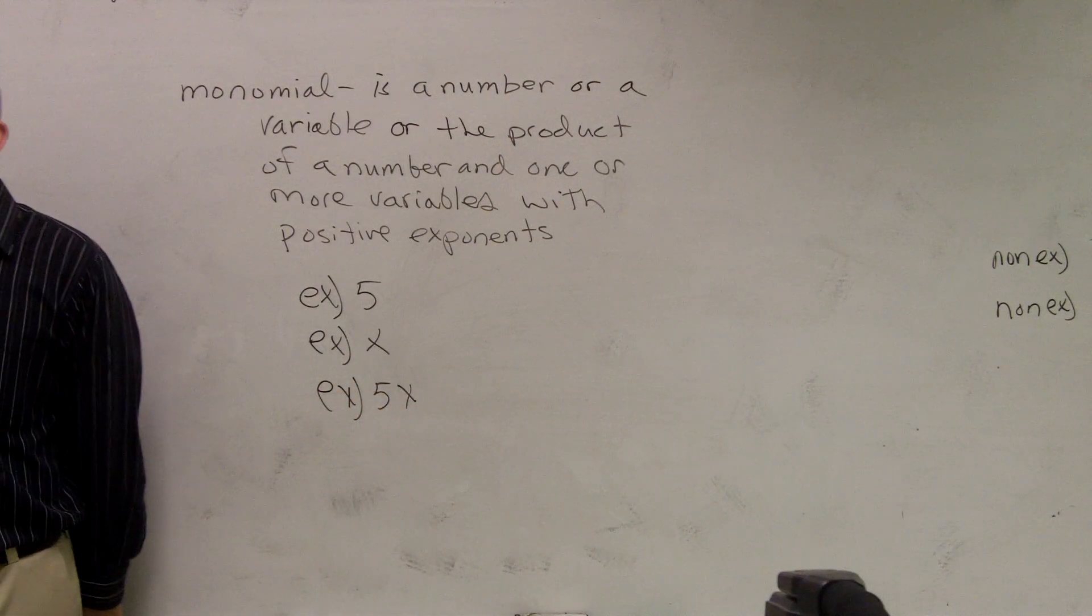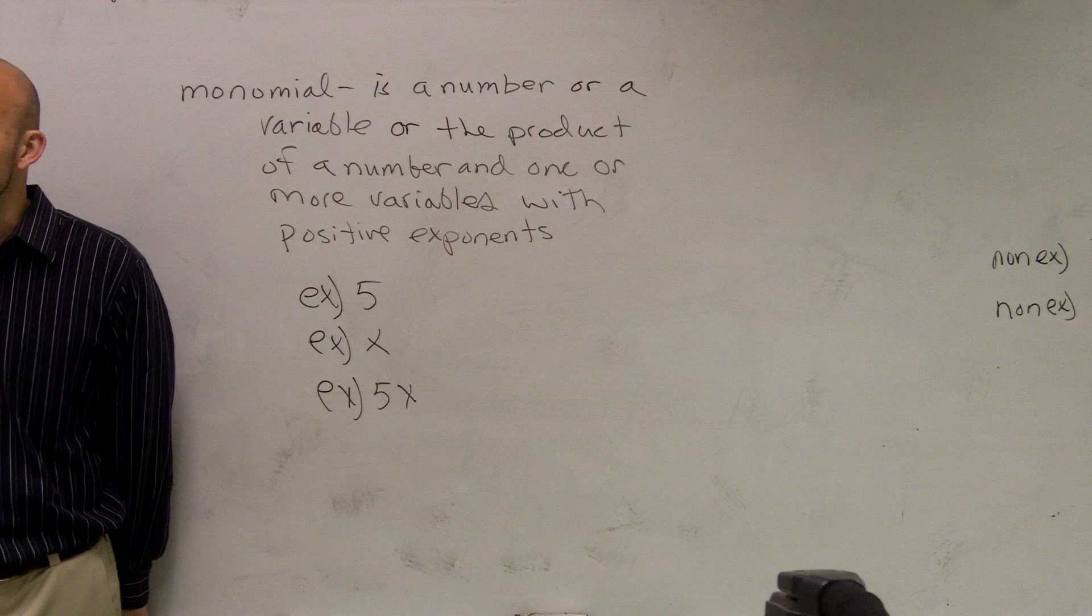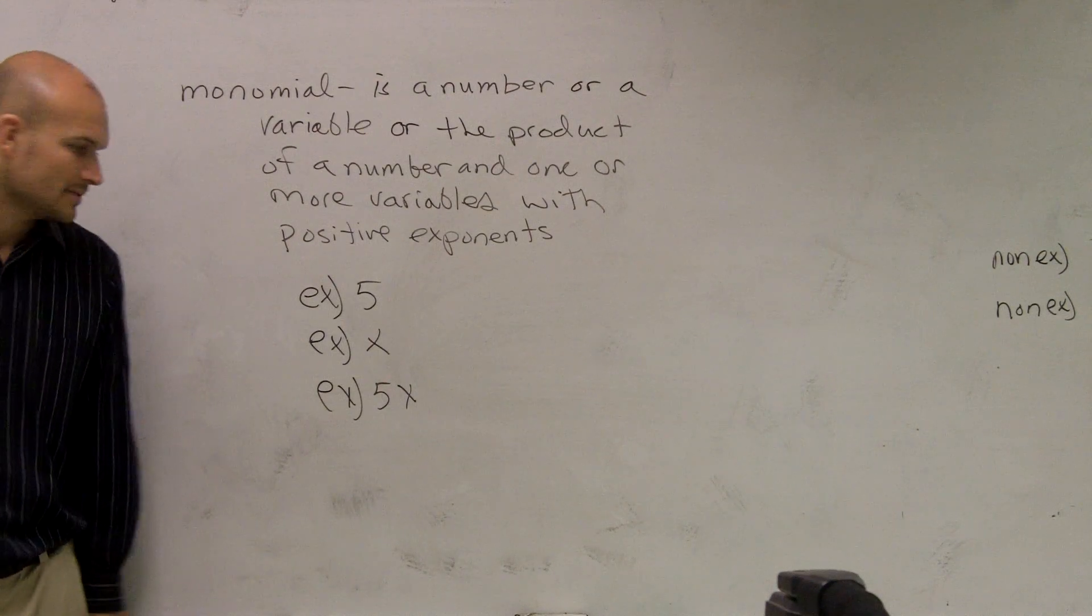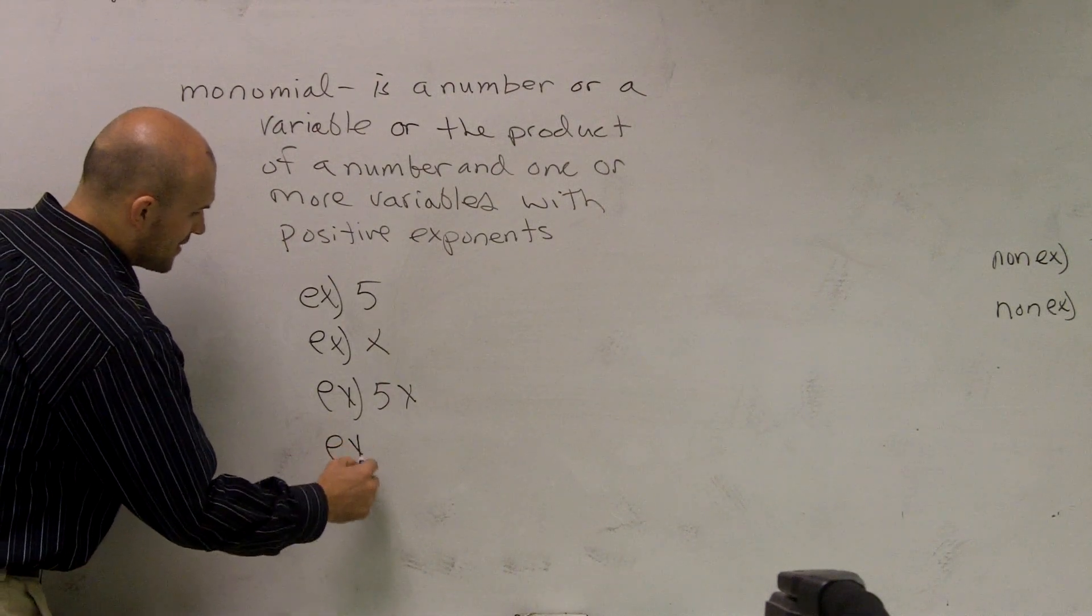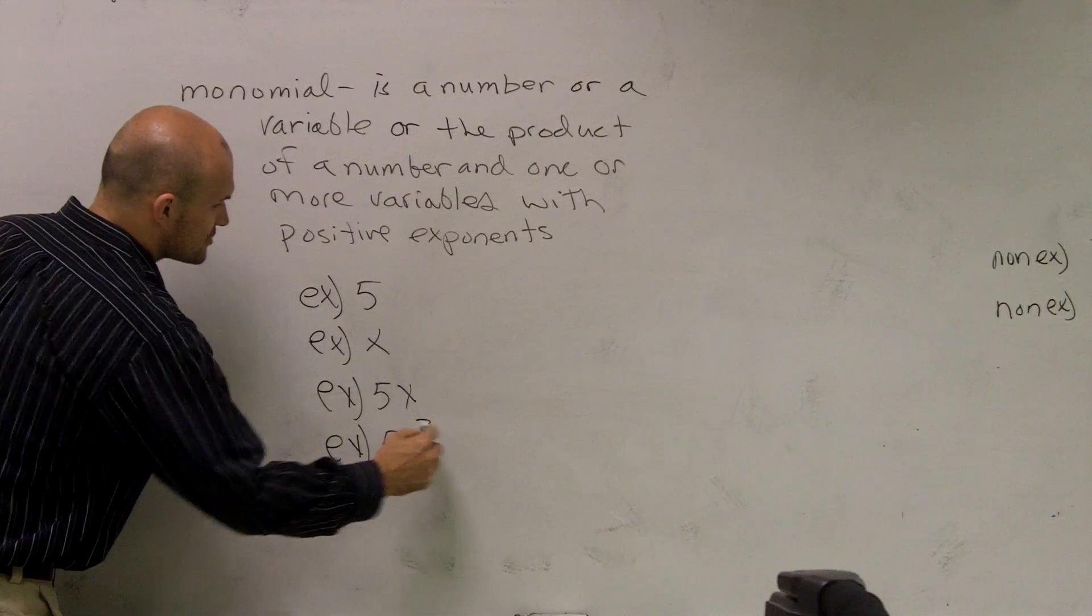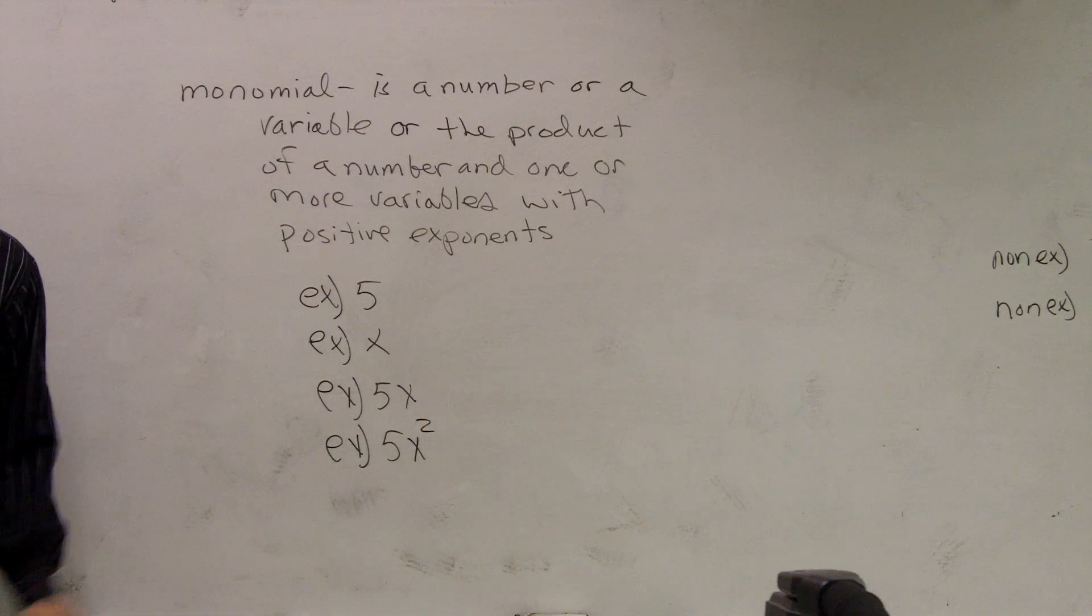Therefore, also is 5x is also written as a monomial. We could keep on going a little bit further. We could say 5x squared is a monomial.